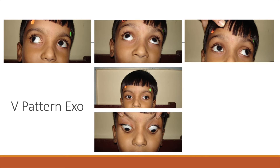These are real-time pictures. This is a V-pattern exo. As we can see, in the downgaze they look almost nicely aligned. This child has a V-pattern exo — there is a left exotropia in the primary position which is clearly increasing in the upgaze. In the downgaze he looks pretty much ortho, or at least quite better.